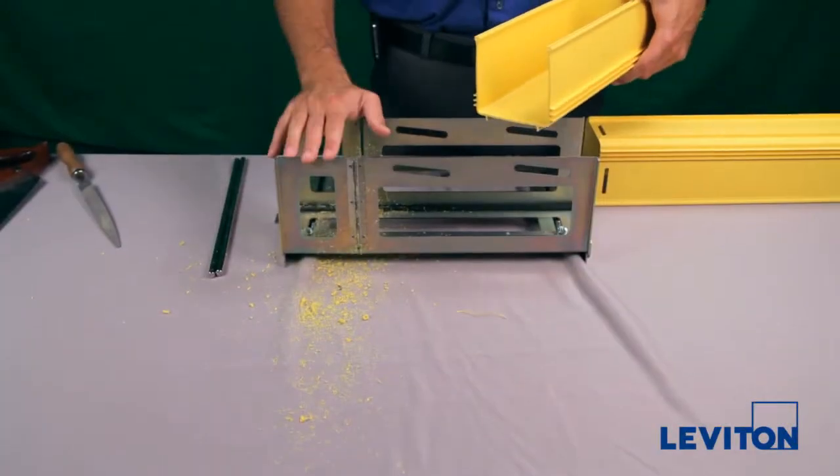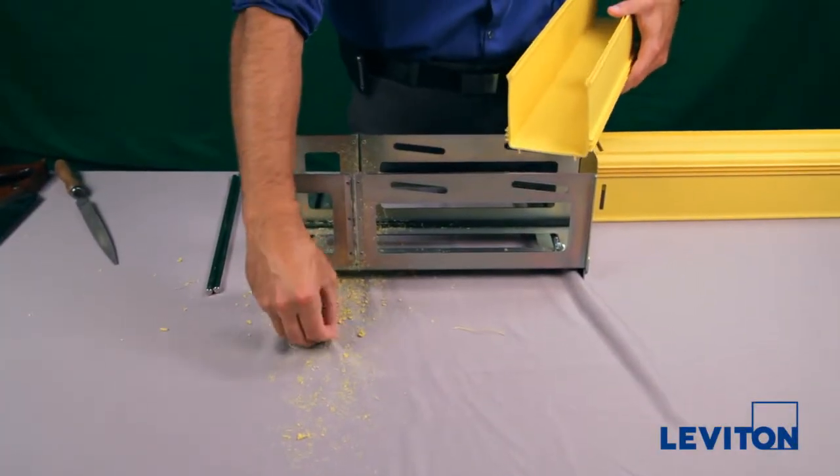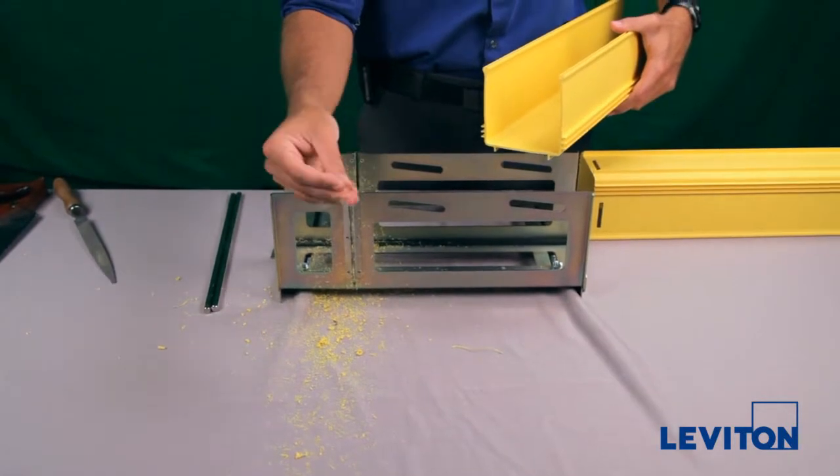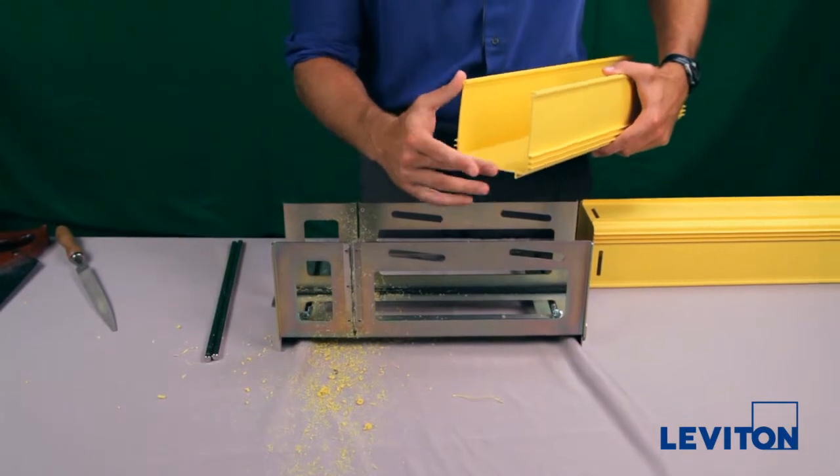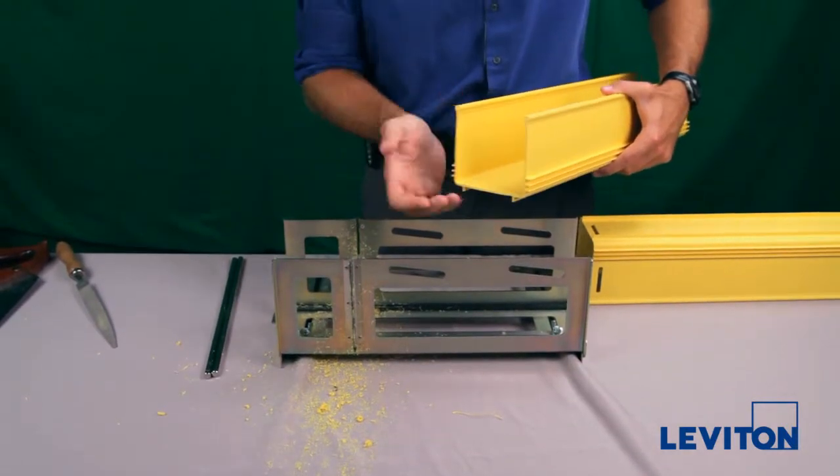So as you can see when you're cutting through the ducting you're going to have a lot of shavings. So make sure that you are cutting these in a work area that's clear of your fiber before installing your ducting.